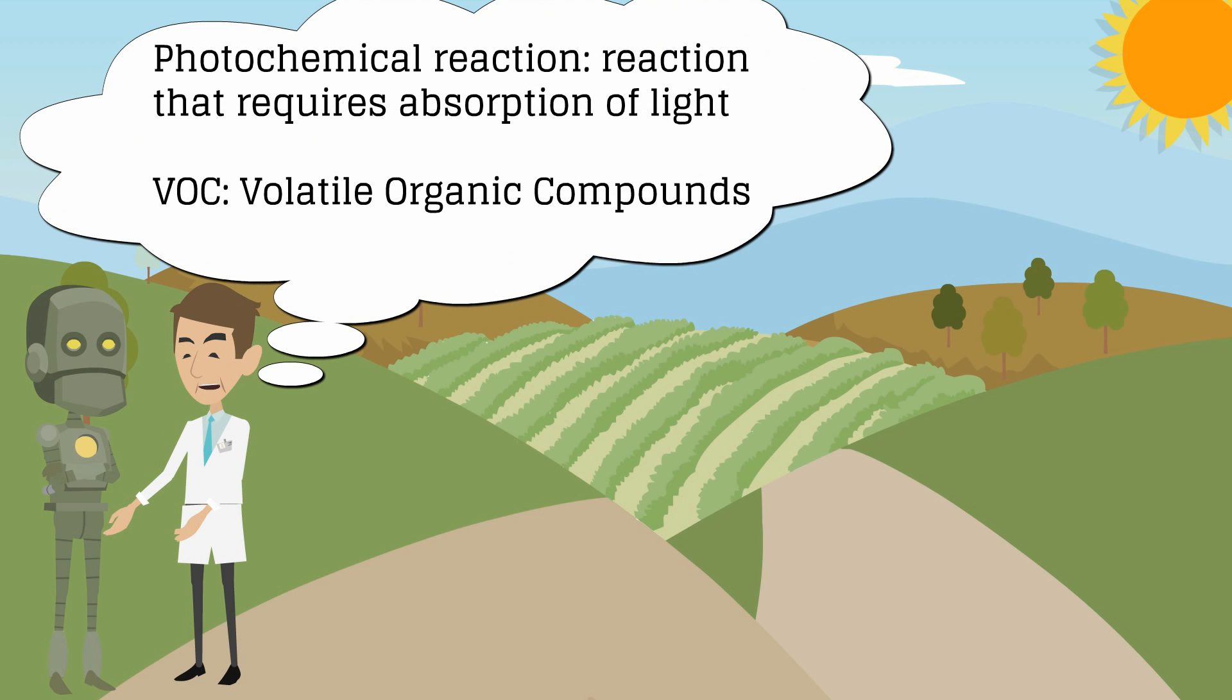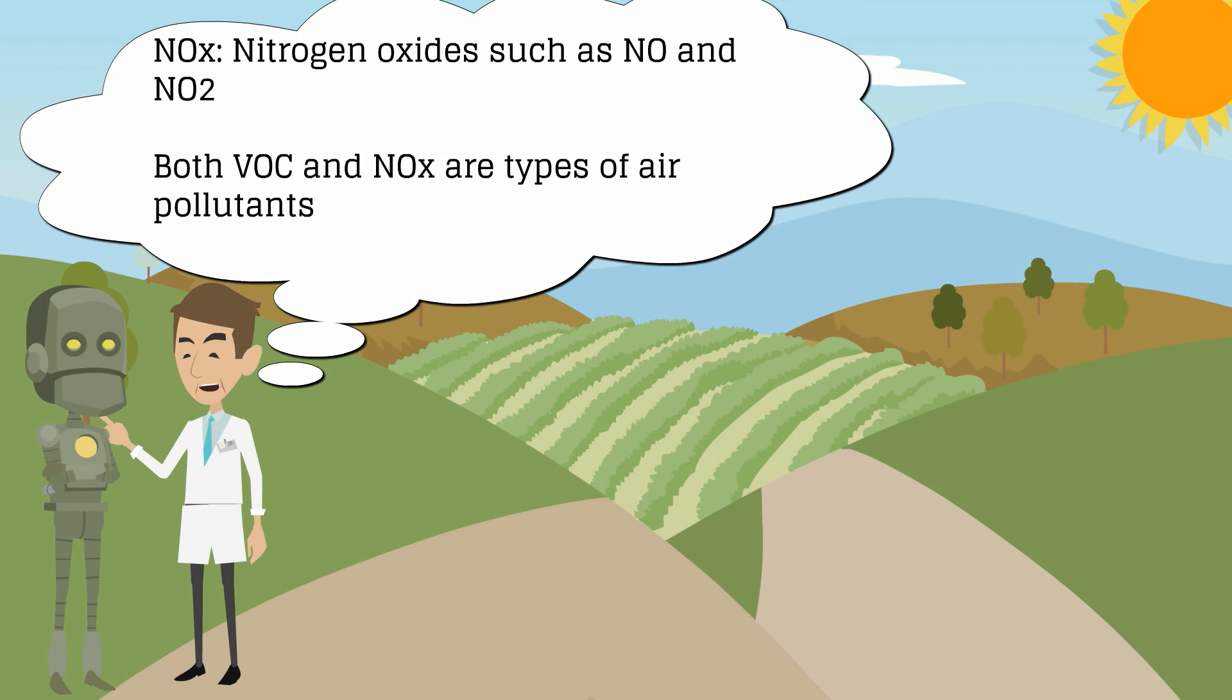Well, a photochemical reaction is a reaction that requires the absorption of light energy to occur. However, VOC stands for volatile organic compounds. These are usually in the form of gases. NOx stands for nitrogen oxides, such as NO, nitrogen oxide, and NO2, nitrogen dioxide. Both VOC and NOx are types of air pollutants.